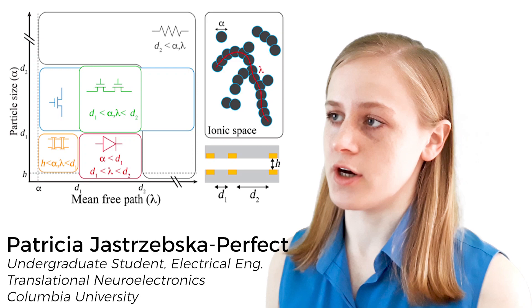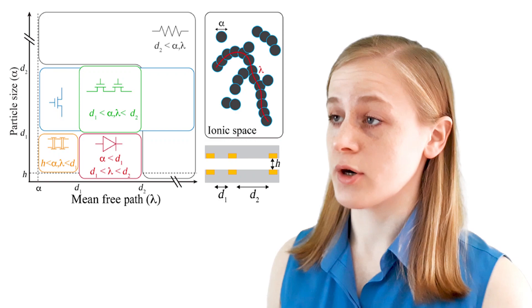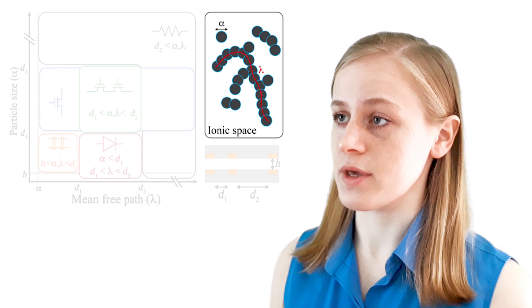MCP incorporates particles of a mixed ionic-electronic conducting polymer within a scaffolding matrix of controllable ionic conductivity. Particles within the matrix have two key properties: alpha, a mean diameter, and lambda, a mean-free path of electronic conduction.